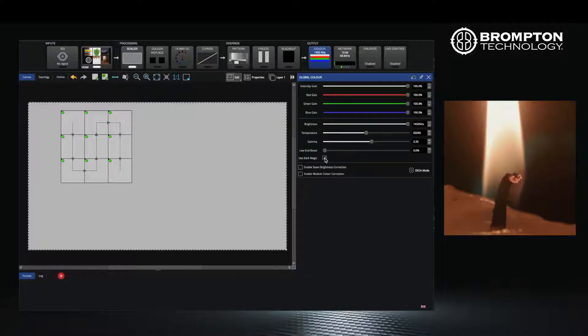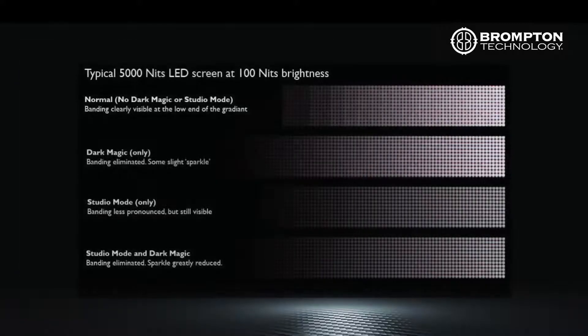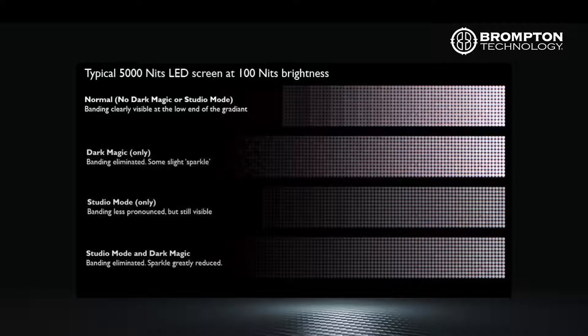Studio mode works by temporarily limiting the maximum brightness of the panels and only works with LED panels that have the feature enabled — you can find a list of these panels in the manual. Studio mode works by compressing the full bit depth of the panel, which would normally be spread across the maximum brightness range, into a new limited brightness range. This means there are now more steps of color available between each unit of brightness, allowing smoother transitions and gradients.